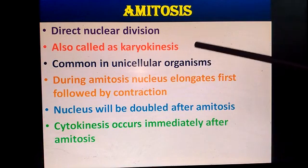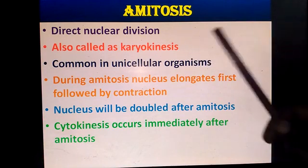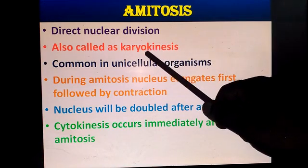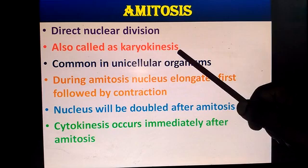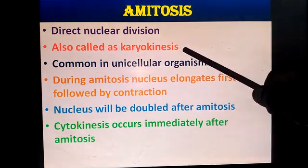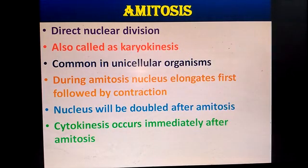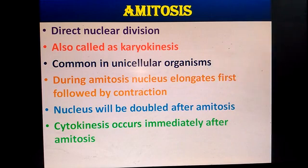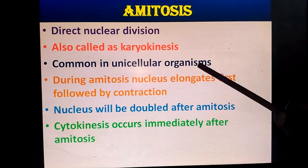This is direct nuclear division, also called karyokinesis. Karyo means nucleus, kinesis means breakdown. Amitosis is common in unicellular organisms such as amoeba and paramecium.